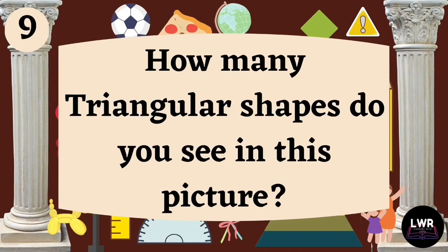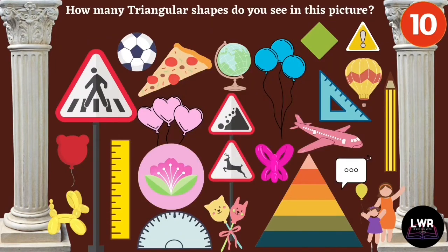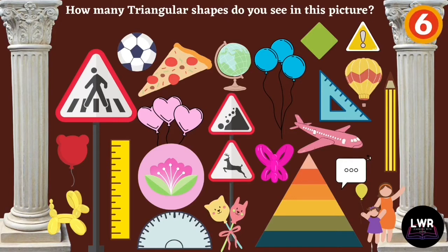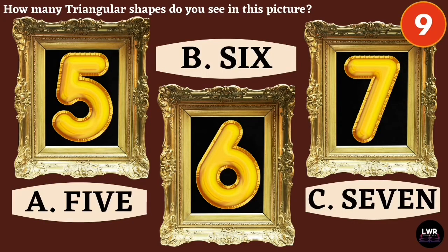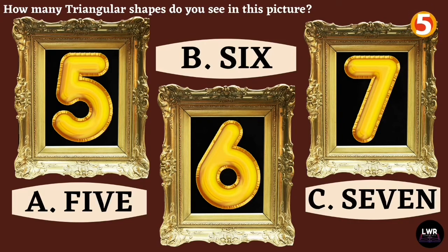Question number nine. How many triangular shapes do you see in this picture? Letter A, five. Letter B, six. Or letter C, seven.